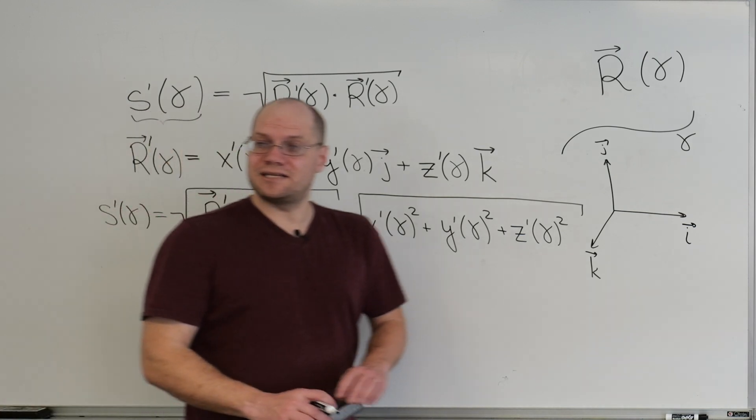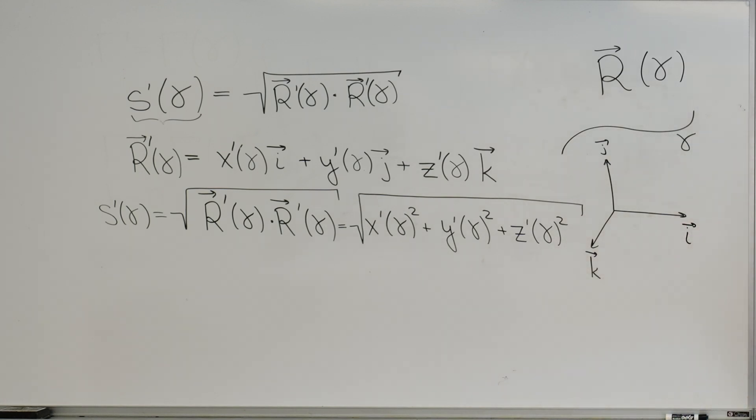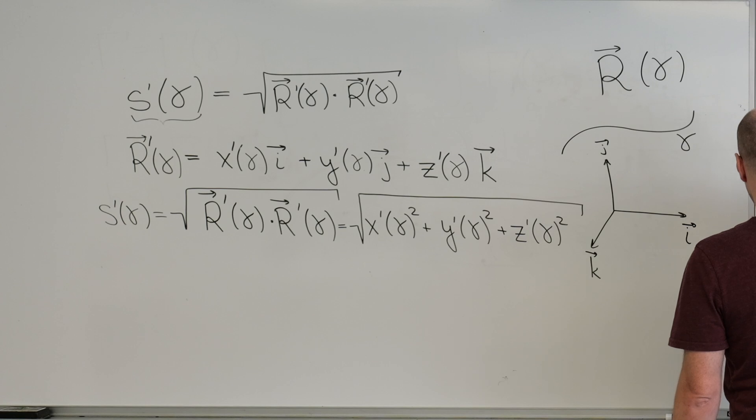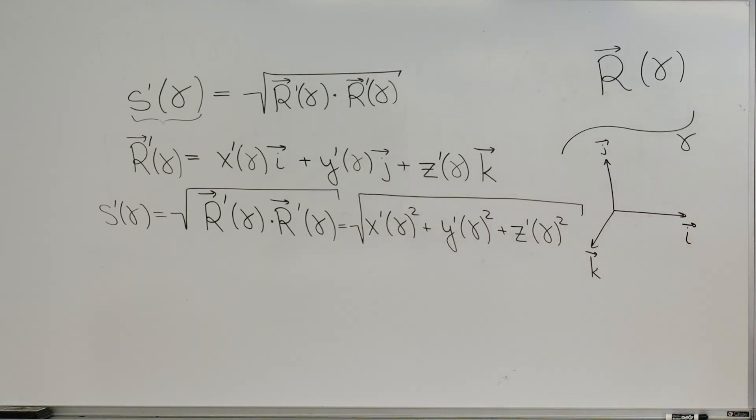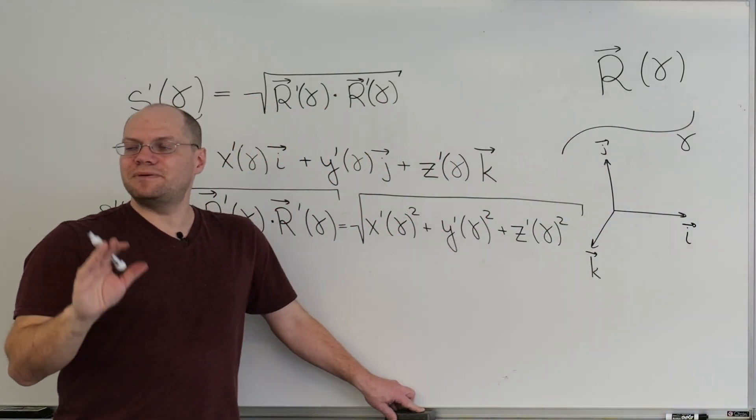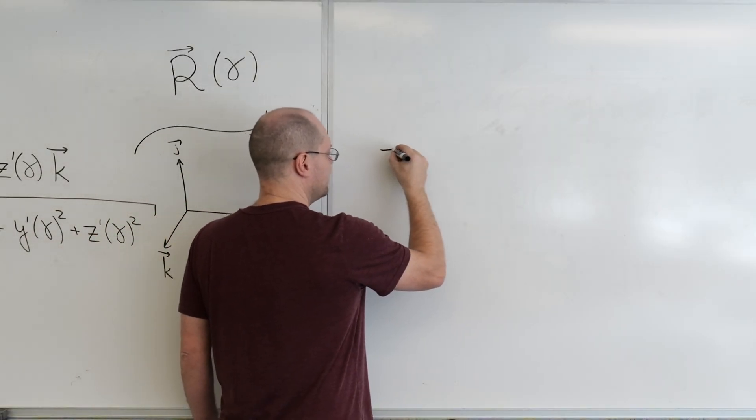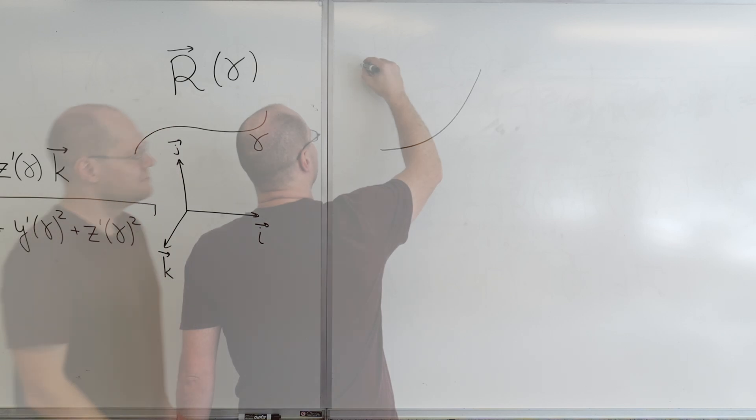And the final demonstration of the quarter will be to show just how impractical arc length parametrization is. It's the best parametrization for geometric insight and theory. Everything works out so beautifully. But even the simplest curve cannot be parametrized by arc length. And for the simplest curve, let's consider the parabola.